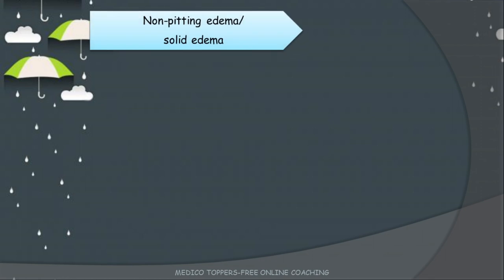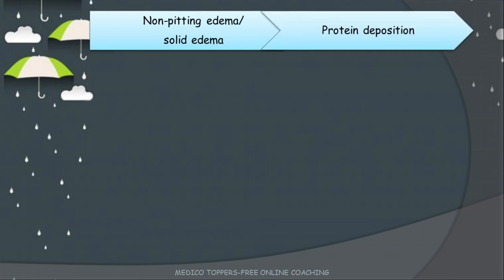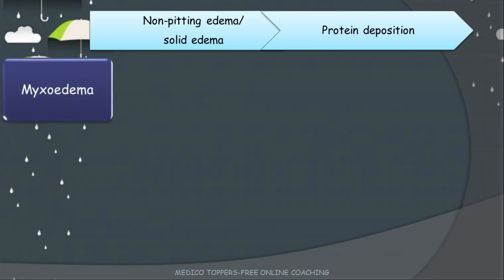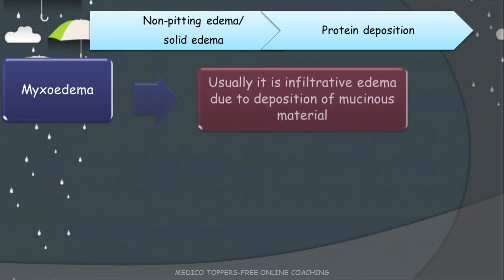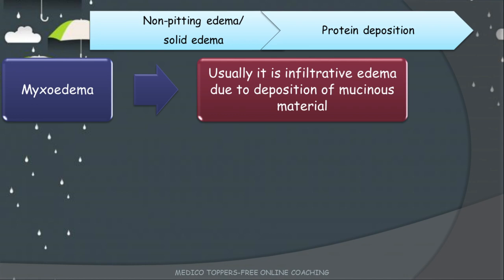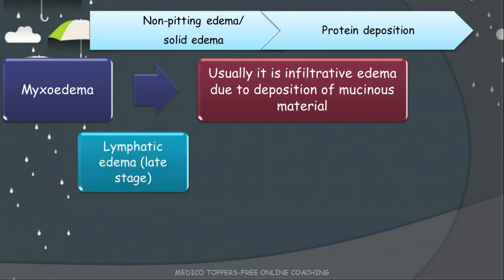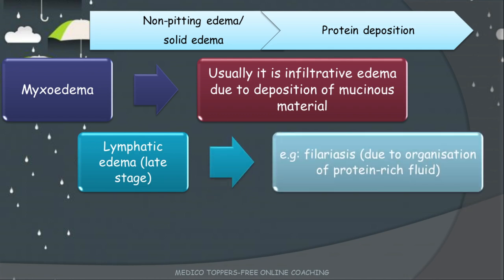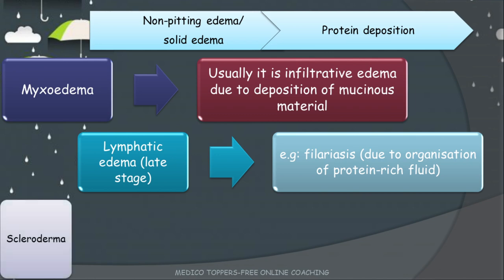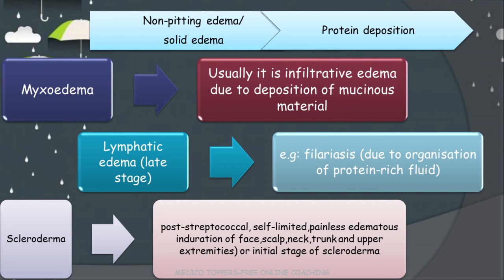Non-pitting edema, or solid edema, is because of protein deposition rather than just fluid. Conditions include: first, myxedema — an infiltrative edema due to deposition of mucinous material; second, lymphatic edema in later stages, mainly seen in filariasis, because of protein-rich fluid; third, scleroderma — a connective tissue disorder, a self-limiting painless edematous induration of the face, scalp, neck, trunk, and upper extremities, with tightness of the skin and features like CREST syndrome.